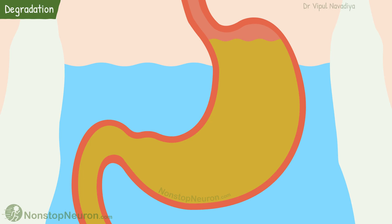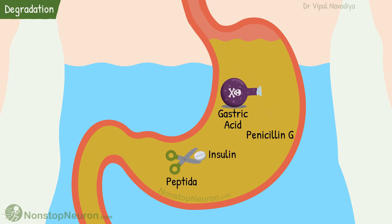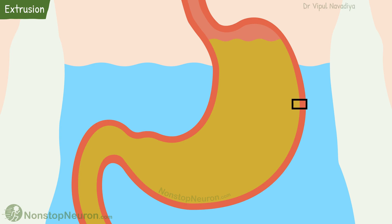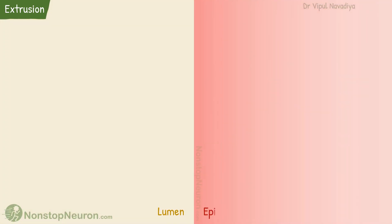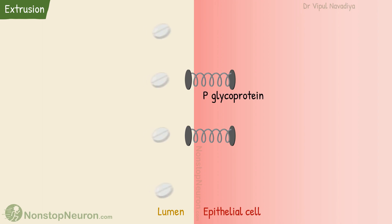The next factor is degradation. Some drugs are degraded in the gastrointestinal tract and therefore not absorbed. For example, gastric acid destroys penicillin G, and the enzyme peptidase degrades insulin. Because of such degradation, many drugs are not effective when given by oral route. Next is extrusion. The gut epithelial cells contain an efflux transporter called P-glycoprotein. Some of the absorbed drug molecules are extruded back into the lumen by them.